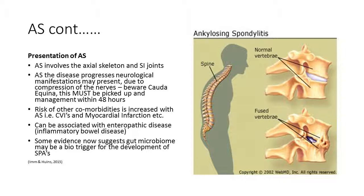Ankylosing spondylitis specifically involves the axial skeleton and the sacroiliac joints. As the disease progresses, neurological manifestations may present due to compression of the nerves. A key red flag to be aware of is cauda equina syndrome, which must be picked up as soon as possible. There is a risk of other comorbidities including cardiovascular incidents and myocardial infarctions. There can be an association with enteropathic disease including inflammatory bowel disease, and newer evidence suggests involvement of the gut microbiome as a bio-trigger for disease development.